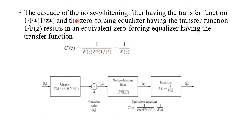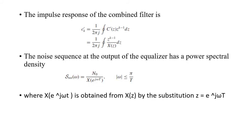A noise whitening filter with transfer function 1/F*(1/z*) is added before the zero-forcing equalizer with transfer function 1/F(z). The overall combined transfer function becomes C'(z) = 1/[F(z)·F*(1/z*)], which equals 1/X(z). The block diagram shows: channel X(z) → add white noise → noise whitening filter 1/F*(1/z*) → vk → equalizer C(z) = 1/F(z) → ik_cap.